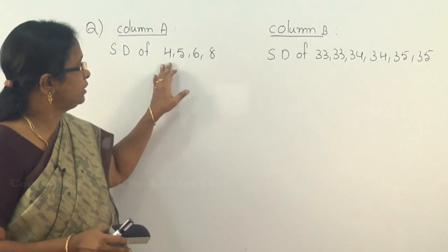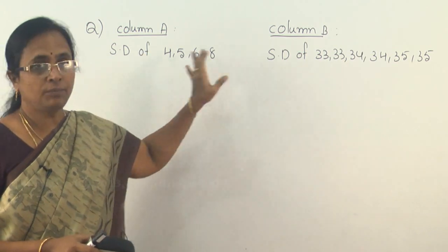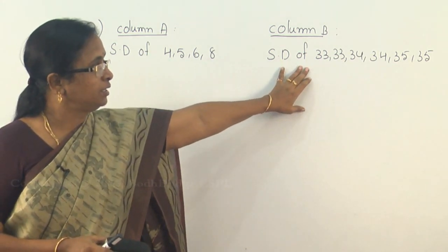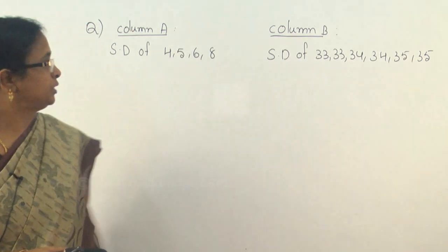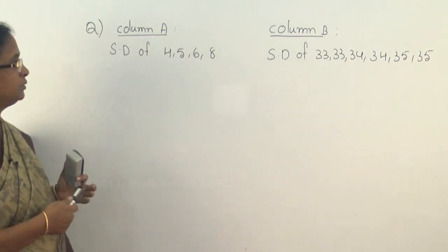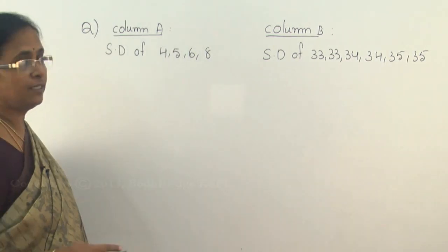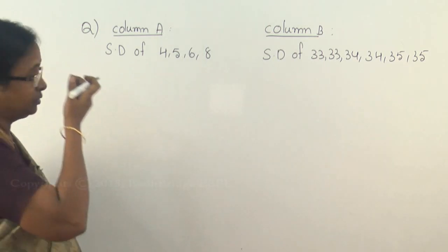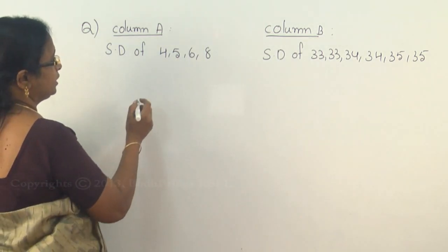Compare the standard deviation of the data given in column A and the standard deviation of the values given in column B. Let us do according to the formula given, then we can analyze how to get the answer quickly. Here the four data is 4, 5, 6, 8.